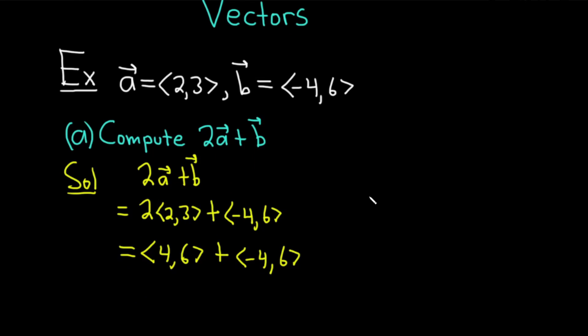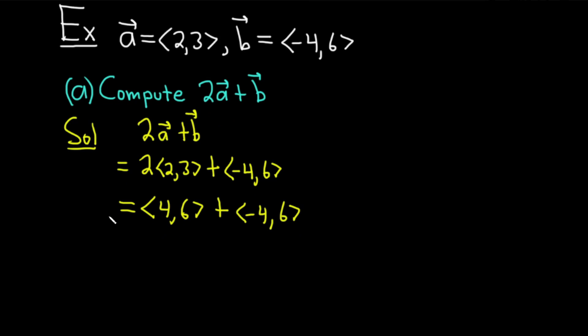And then now to add the vectors, all you do is you add the components. So in this case, the first component is 4, and in the second vector, the first component is negative 4. So it'll just be 4 plus negative 4, comma, and then 6 plus 6.